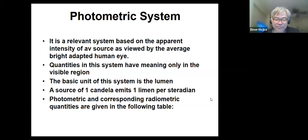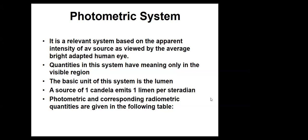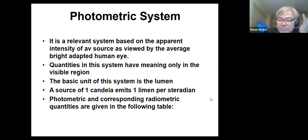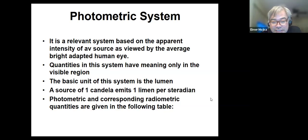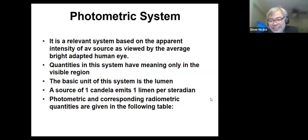The photometric system has something to do with how light is perceived by the human eye. It takes into account the sensitivity of the human eye to different wavelengths, with greater emphasis on the visible spectrum — because that's what we can see, the colored one.